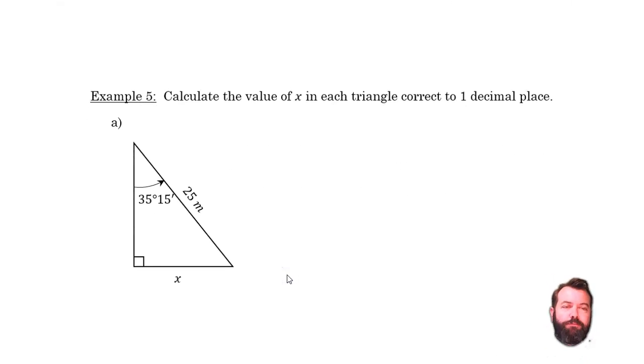Here's an example. I have a right-angle triangle. I know the angle here, 35 degrees 15 minutes, and I know how long the hypotenuse is. So I can use sine or cosine here. I'm looking to find x here, and compared to that angle there, x is the opposite side. So it's opposite, so we're going to use sine.